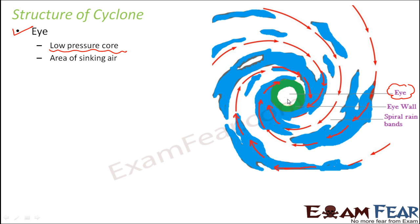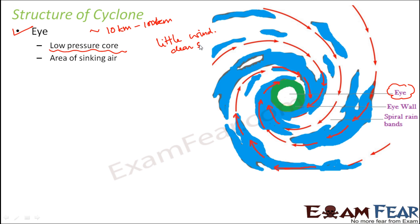Exactly at the center you see a clear, calm sky — no clouds, nothing visible. The diameter of the eye ranges approximately from 10 kilometers to 100 kilometers. The bigger the center, the more winds will be rotating around it, making the cyclone more dangerous. So low winds and clear sky are the key characteristics of the eye.